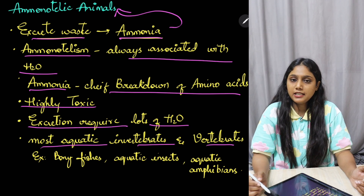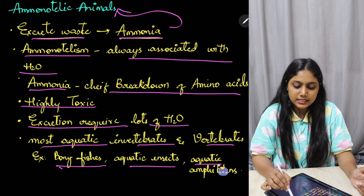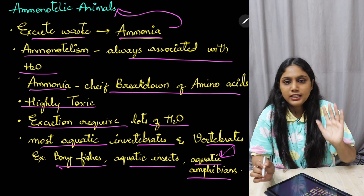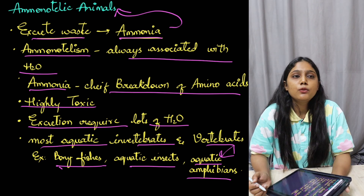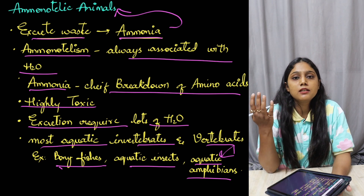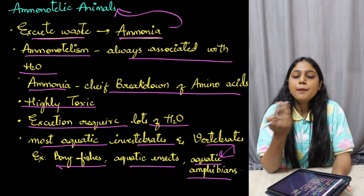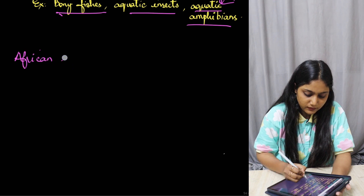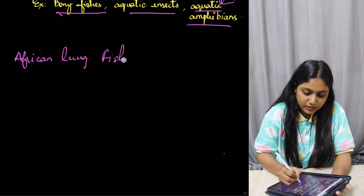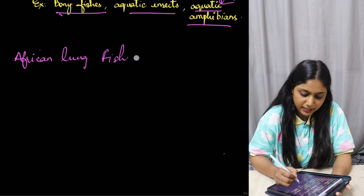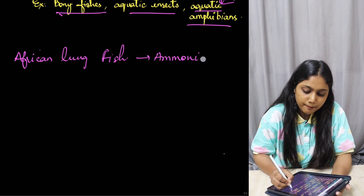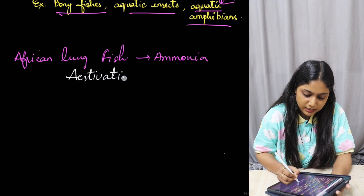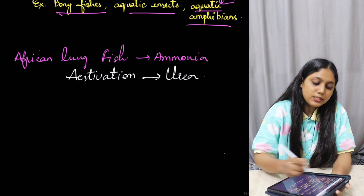Most aquatic invertebrates and vertebrates excrete ammonia — for example, bony fish, aquatic insects, and aquatic amphibians. Since they live in water, they can easily excrete ammonia. An interesting example is Protopterus, the African lungfish — while it is in water, it will excrete ammonia. But when it goes into estivation, the excretion pattern changes.